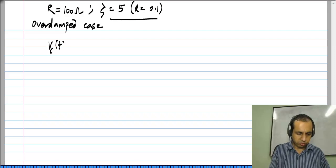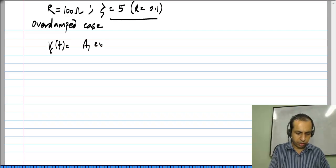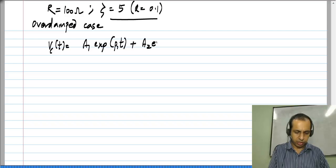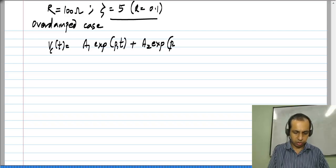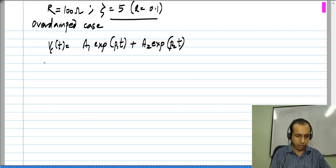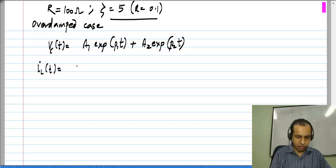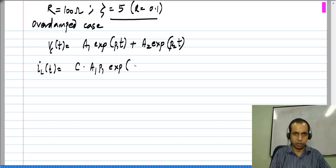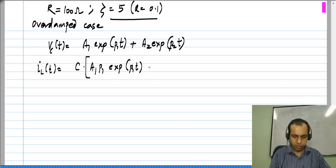So we have V_c(t) to be A_1 exponential P_1 t plus A_2 exponential P_2 t. And the current I_L(t), which is the same as the capacitor current, is C times A_1 P_1 exponential P_1 t plus A_2 P_2 exponential P_2 t.